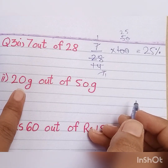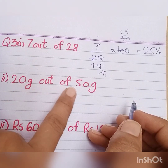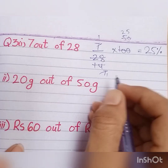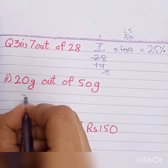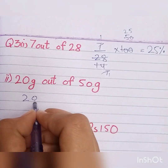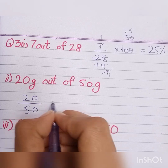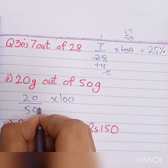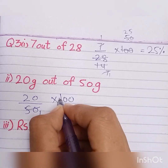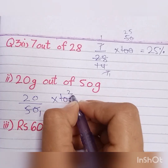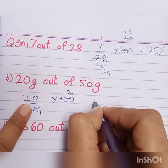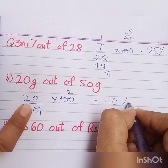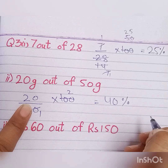Next, we have 20 grams out of 50 grams. So we write it as 20 by 50 multiplied by 100. Here 50 and 100 cancel — 50 becomes 1 and 100 becomes 2. So 20 multiplied by 2 gives us 40. It means that we have 40 percent.